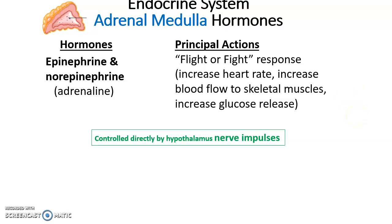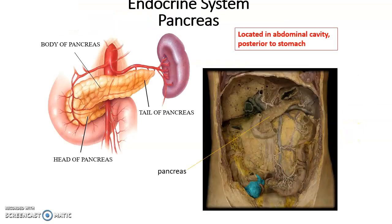The adrenal medulla makes two hormones — epinephrine and norepinephrine — collectively and commonly known as adrenaline. Epinephrine and norepinephrine help stimulate the fight-or-flight response. When released into the bloodstream they increase heart rate, increase and deepen breathing, increase blood flow to skeletal muscles, increase the release of glucose to be used by those muscles, and suppress the digestive system. The adrenal medulla is controlled by nerve impulses directly from the hypothalamus.